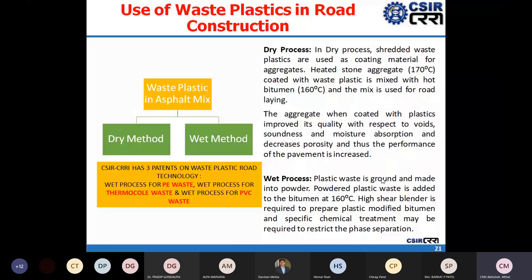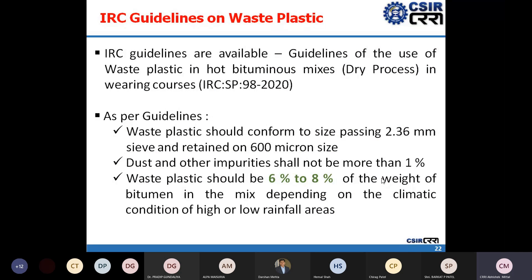The dry process is governed by IRC: SP 98-2020, the latest guideline revised from the 2013 version, which specifically addresses the use of waste plastic in hot bituminous mixes via the dry process. The waste plastic should conform to size passing 2.36 mm and retained on 600-micron sieve. Dust and other impurities should be less than 1%. Waste plastic should be added at 6–8% of the weight of bitumen used in the mix, which is approximately 0.4–0.5% of the total weight of the bituminous mix.